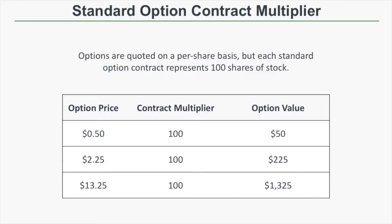The last basic characteristic you need to know about an option is the standard option contract multiplier. All it means is what you need to multiply the option's price by to figure out its actual dollar value. Standard equity options have a contract multiplier of 100 because they represent 100 shares of stock. So a 50-cent option is actually worth $50, a $2.25 option is worth $225, and a $13.25 option is actually worth $1,325. So if you wanted to buy that $13.25 option, you'd need $1,325 in your trading account.